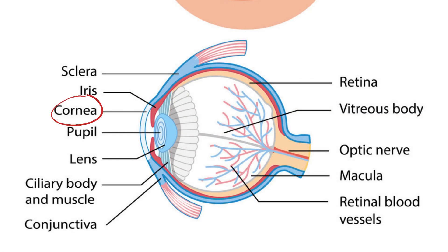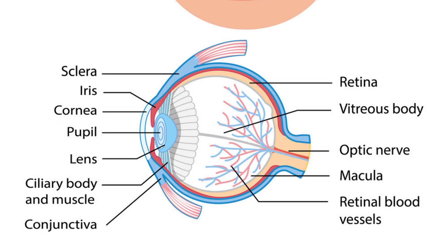The eye is made up of several different parts, including the cornea — this is the clear, dome-shaped surface that covers the front of the eye. It helps to focus incoming light.